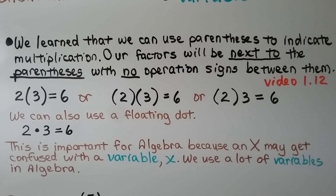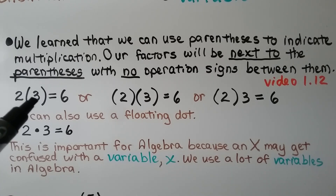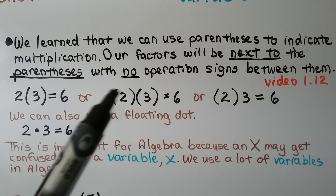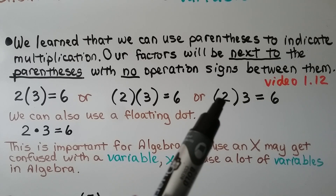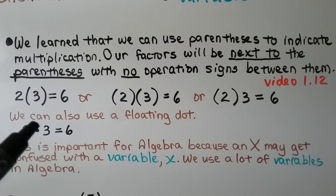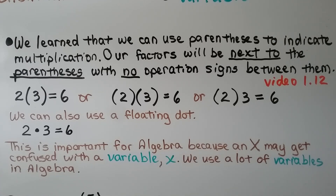We learned that we can use parentheses to indicate multiplication. Our factors will be next to the parentheses with no operation signs between them. We learned about that in video 1.12 when we learned about grouping symbols. So this is 2 times 3, which equals 6. We can also write both factors in parentheses, or one factor in parentheses with the other on the outside. We can also use a floating dot as 2 times 3. This is important for algebra because that big x may get confused with a variable x, and we use a lot of variables in algebra.